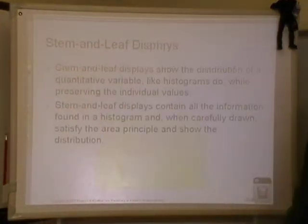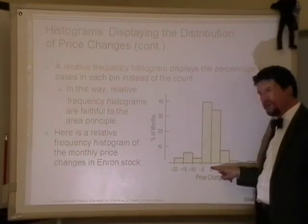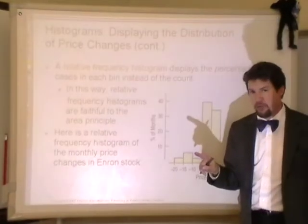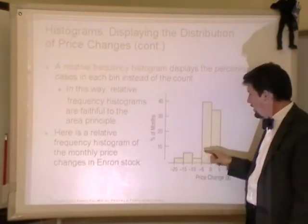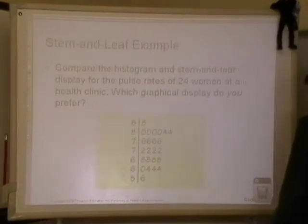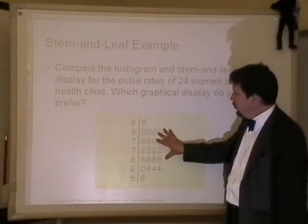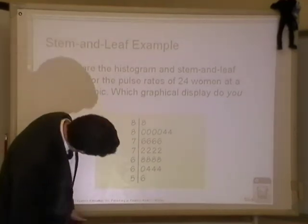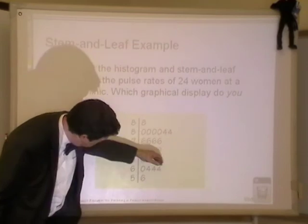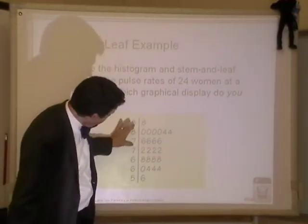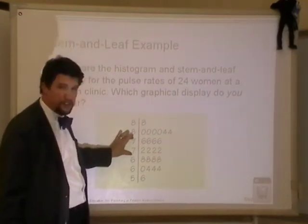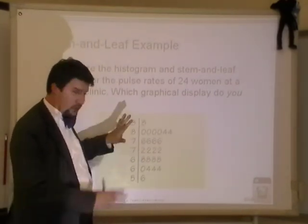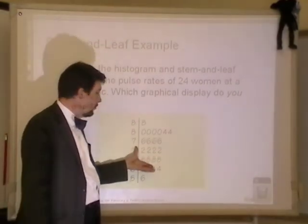With a histogram, I can decide what the width of the bars is going to be — $5 width, $1 width, $0.25 — I can determine that on my own. But with a stem and leaf plot, the bar width is fixed: it's either a width of 5 if you have a split stem, or a width of 10 for a non-split stem. It has to be that way because of the base-10 number system we use.